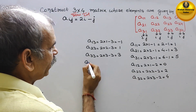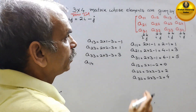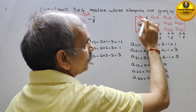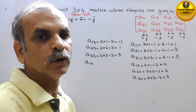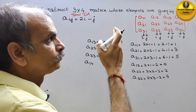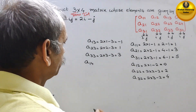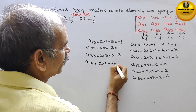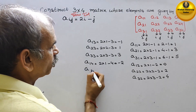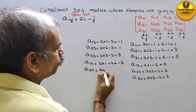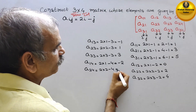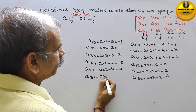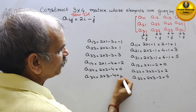Next comes A(1,4). Do it systematically — you can go column-wise. So A(1,4): 2 into 1 minus 4, that is equal to minus 2. Next comes A(2,4): 2 into 2 minus 4, that is equal to 0. And the last one is A(3,4): 2 into 3 minus 4, that is equal to 2.